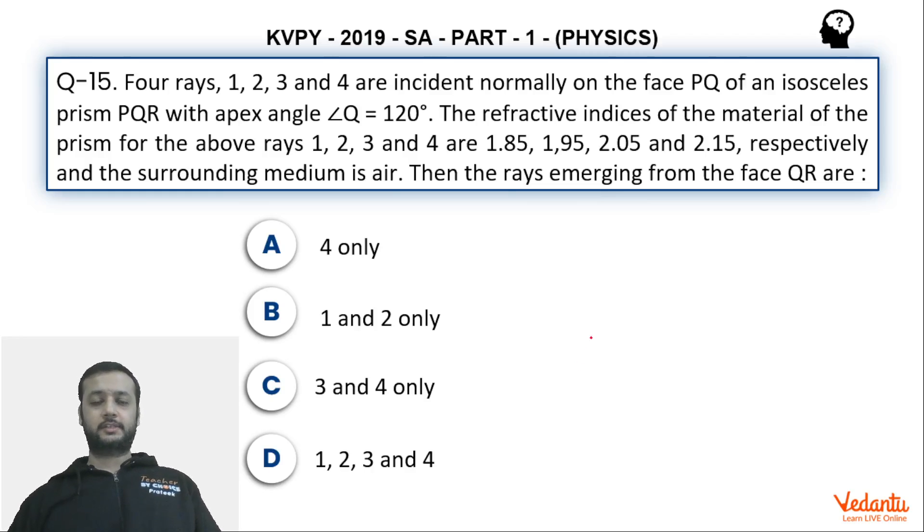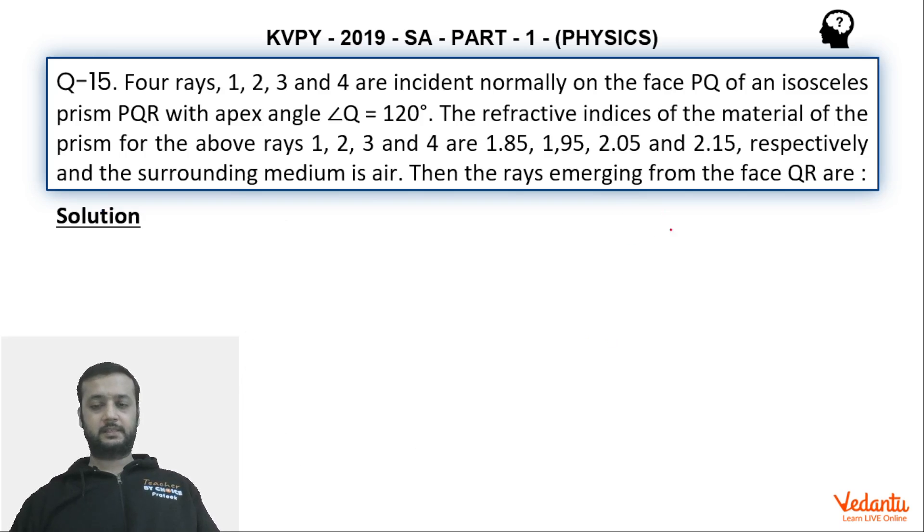Hi dear students, let's see this question that came in KVPY 2019 SA part 1 physics paper. The question is from the topic of TIR. Although a simple question, we have to do this slightly carefully because there is one aspect where some students might have gone wrong. So let's see what's happening over here. I'll be drawing the data in the next slide because we have more space over here.